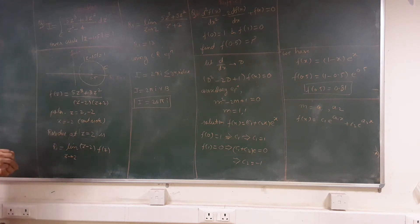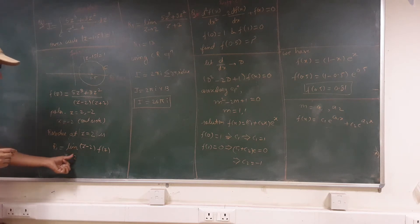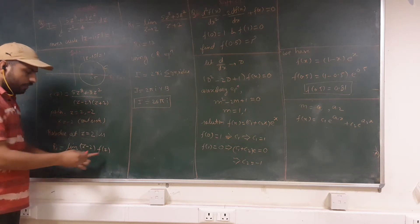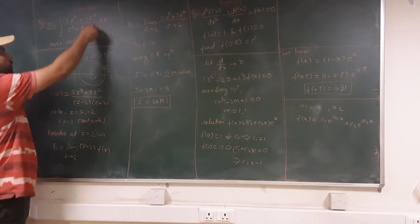So now the method is to find the residue. For finding the residue we will simply write limit z tending to the pole, that is limit z tending to 2, (z - 2) times f(z). Here f(z) is given to you.